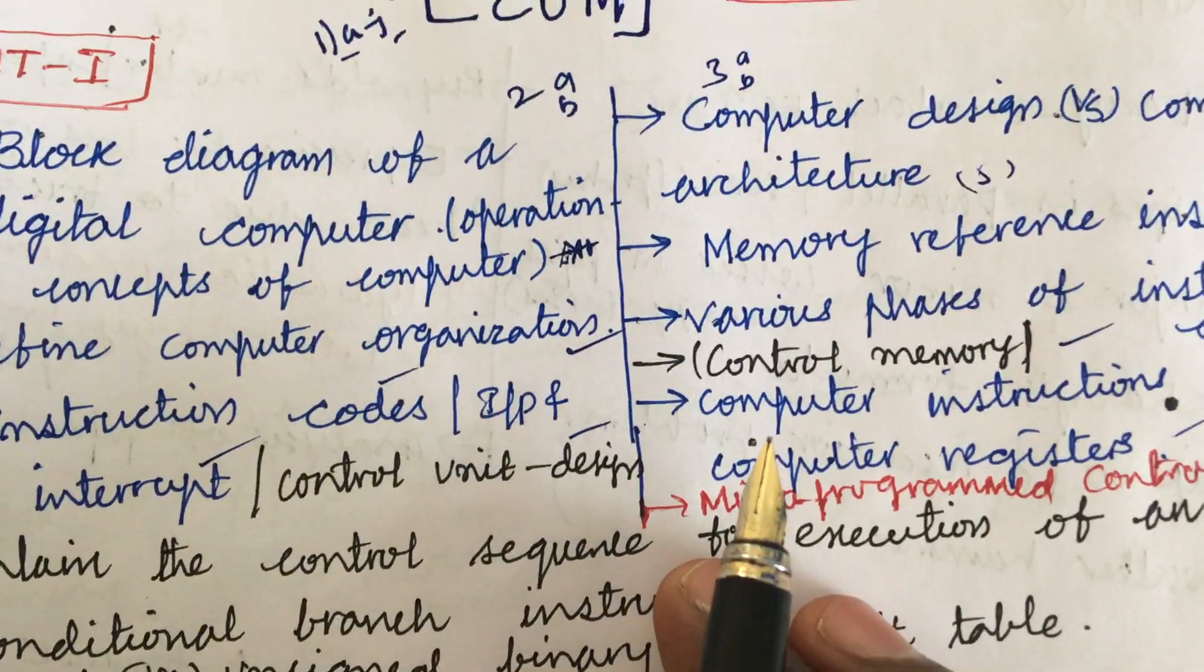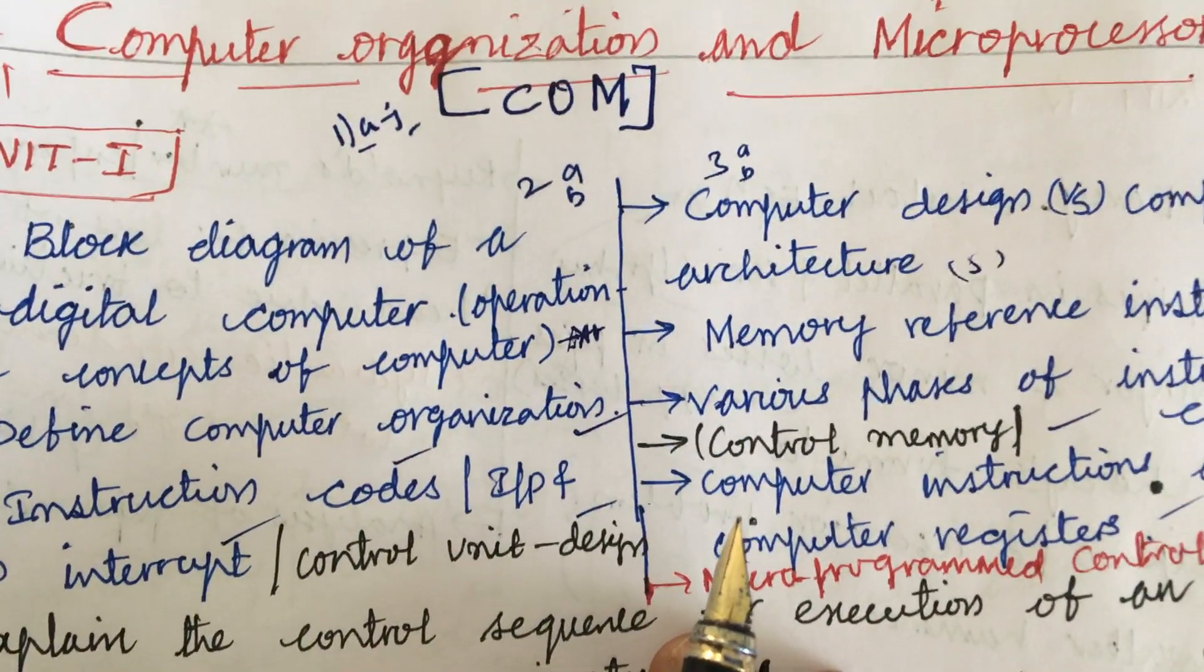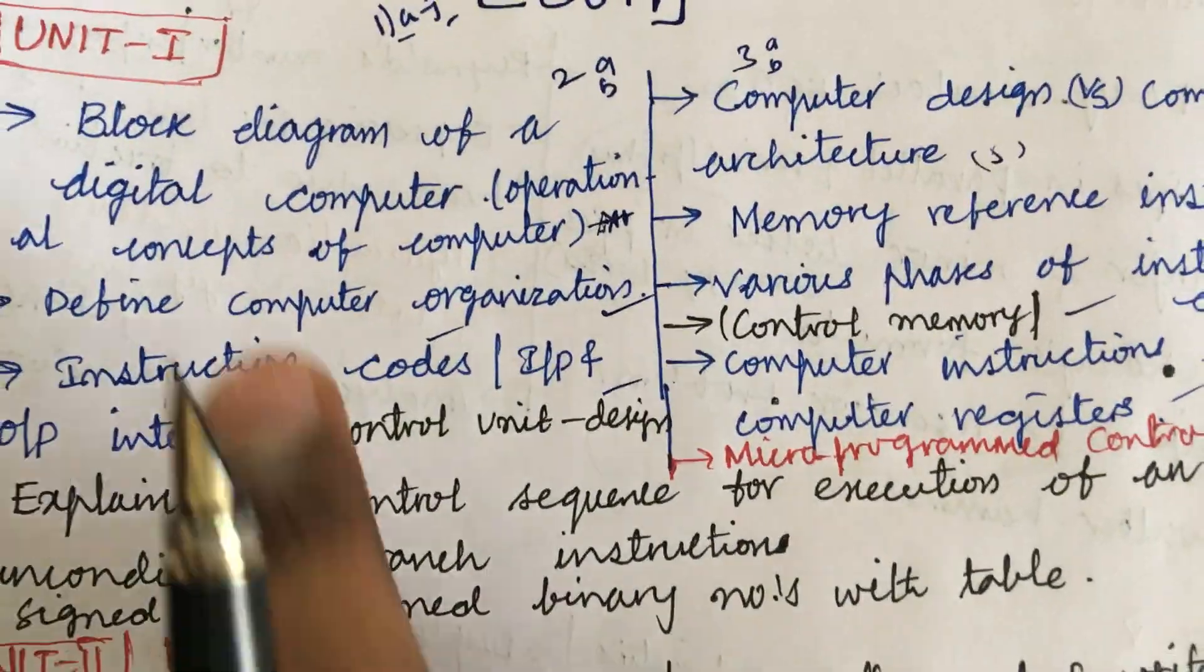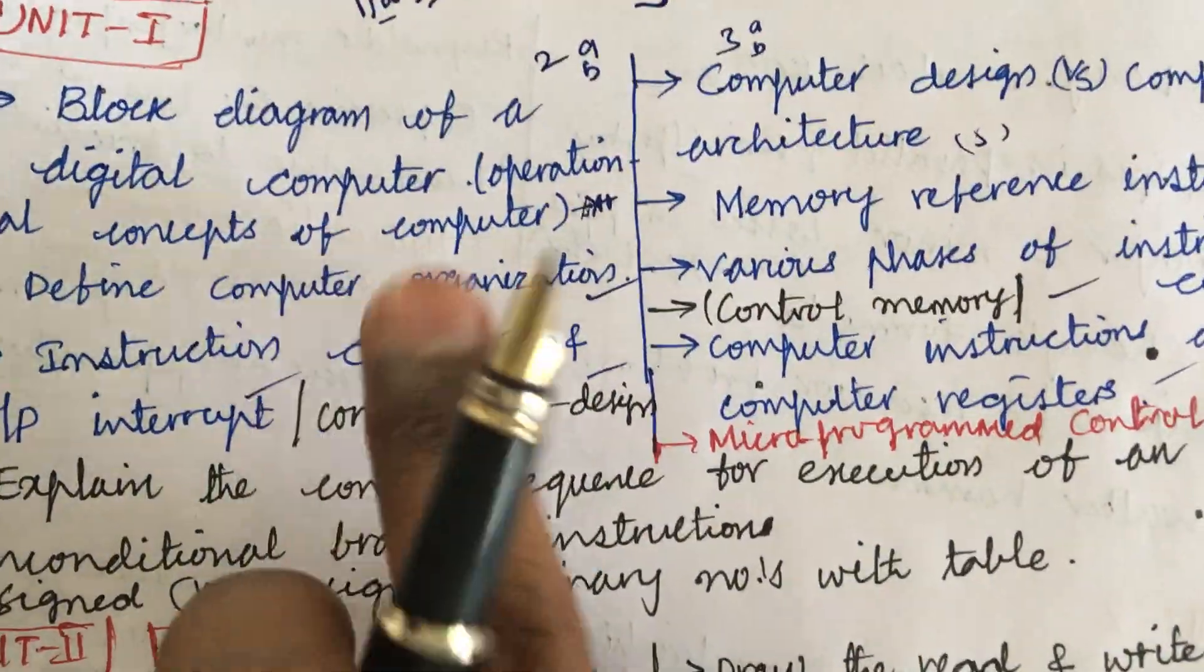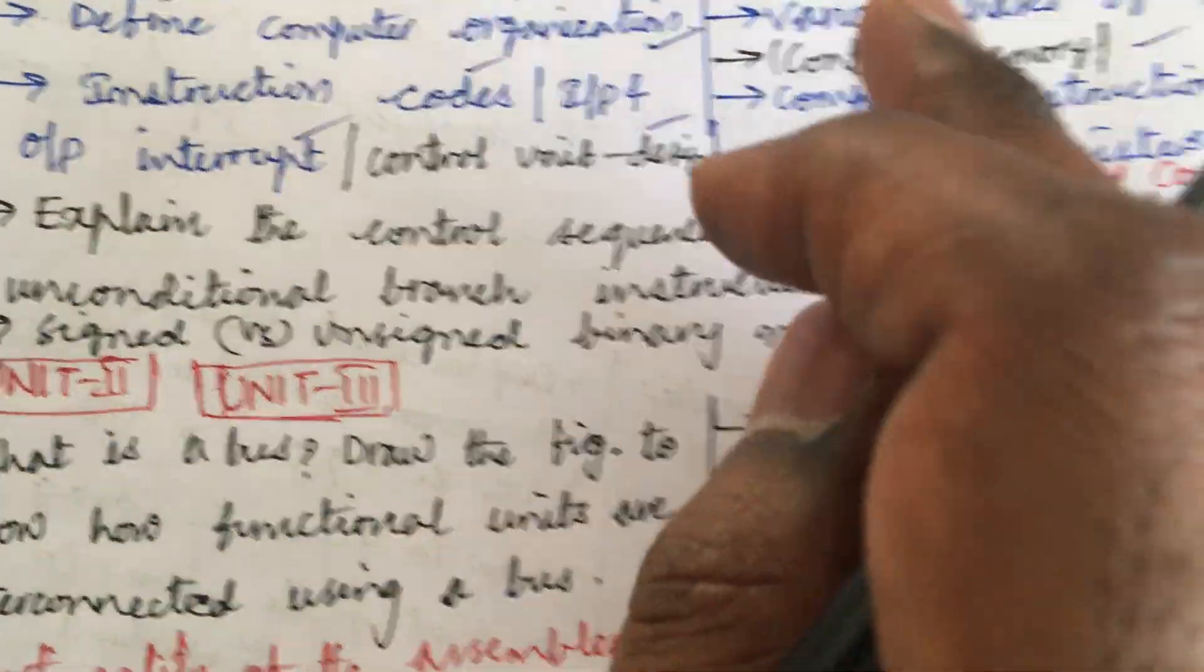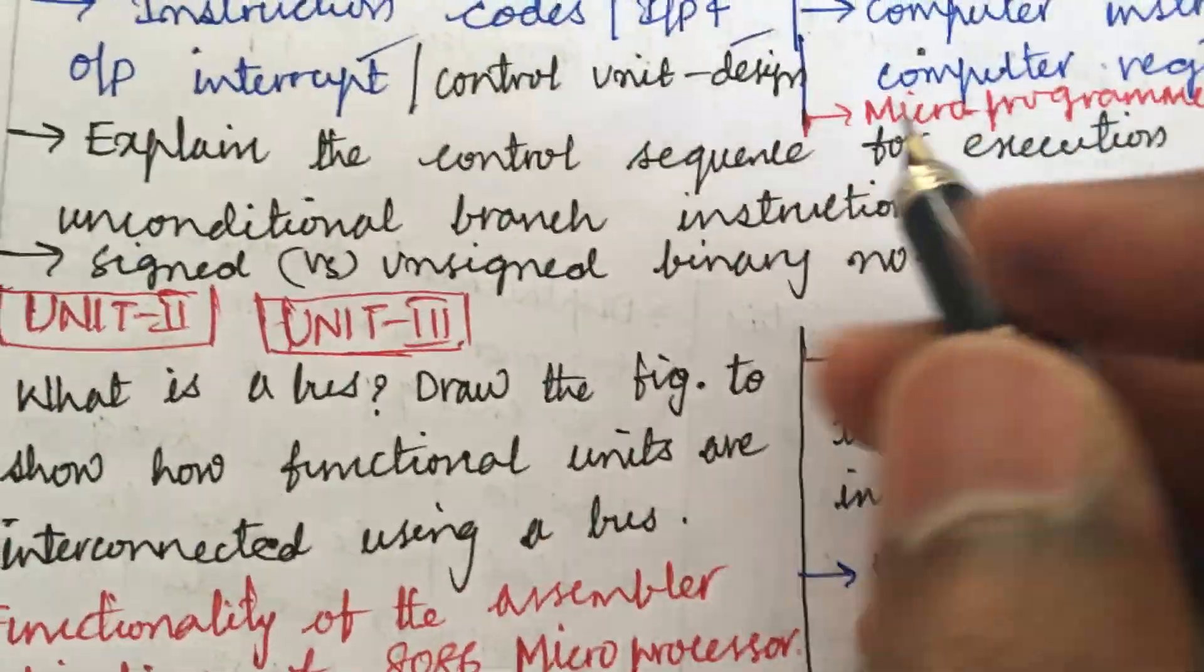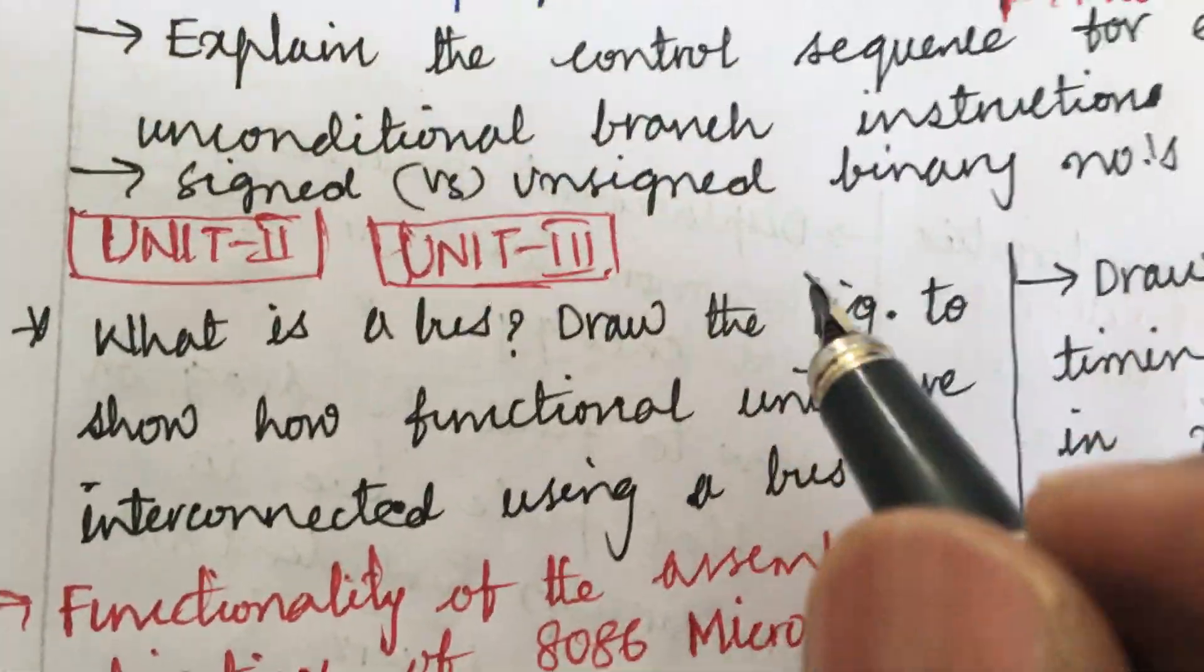You need to have to write even the programs also related to the course computer organization and microprocessor. These all are said to be the topmost questions where you are going to get 15 out of 15 marks if you are working out all these questions and writing it very neatly as the concept of how to write a theory paper. I have uploaded a video please go through it.